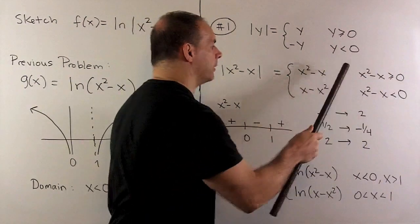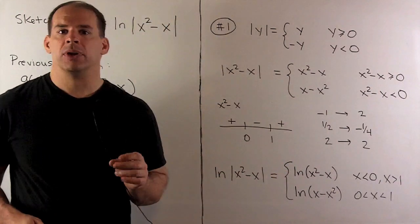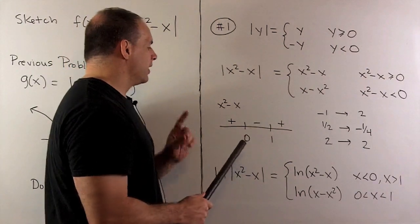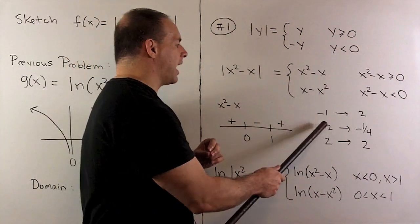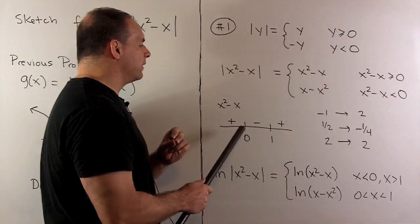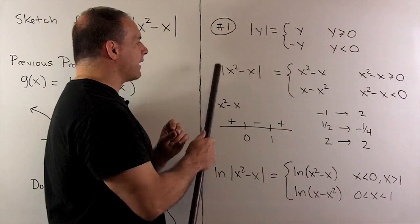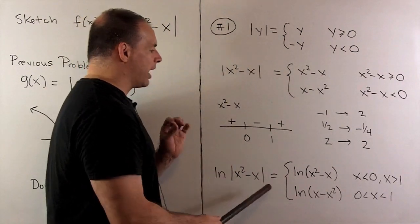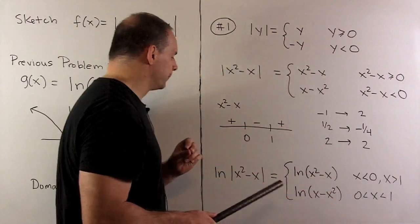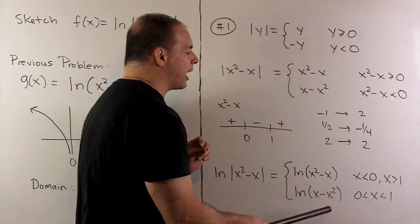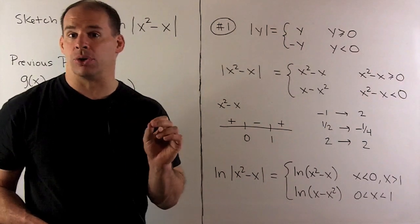We sort this out by finding where x² - x = 0, which gives 0 and 1. We mark off those points, then check a point in each region for the sign. Checking at x = -1, 1/2, and 2, we get positive, negative, positive. So ln|x² - x| equals ln(x² - x) when x < 0 or x > 1, and ln(x - x²) when x is between 0 and 1. Note we exclude the endpoints since ln(0) is undefined.